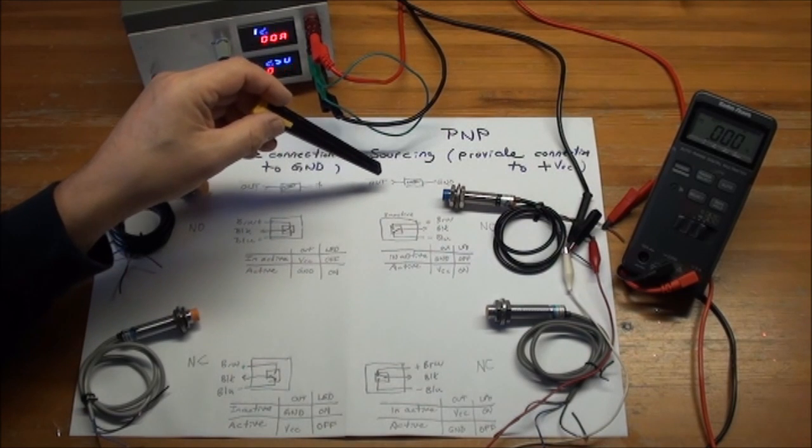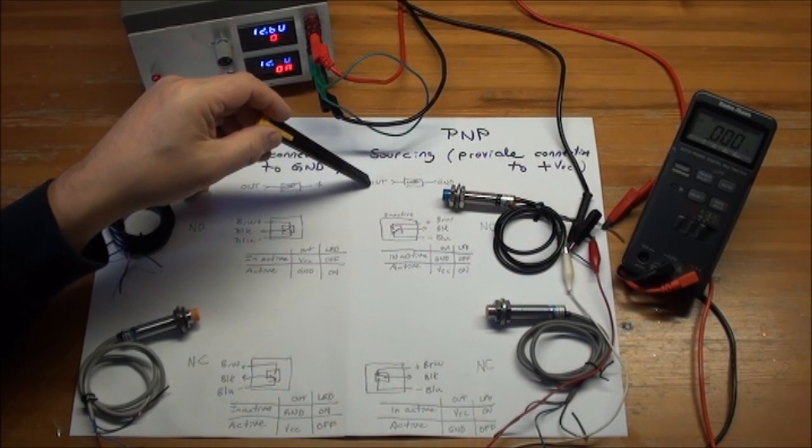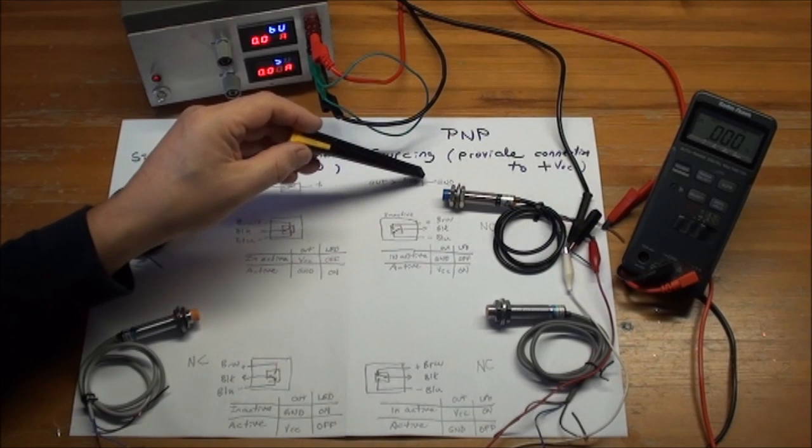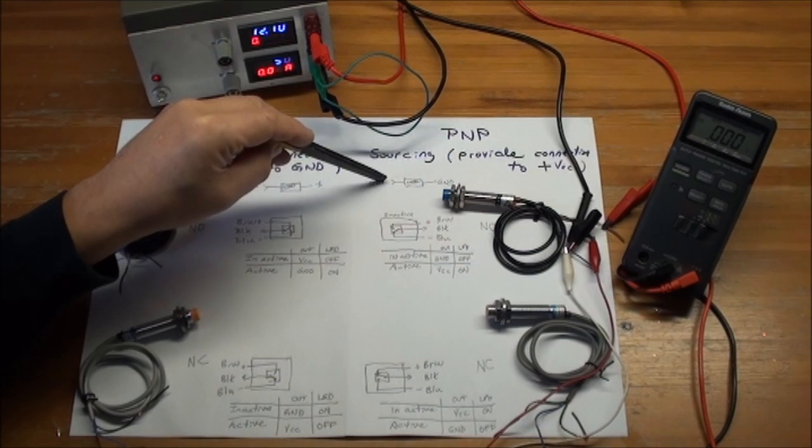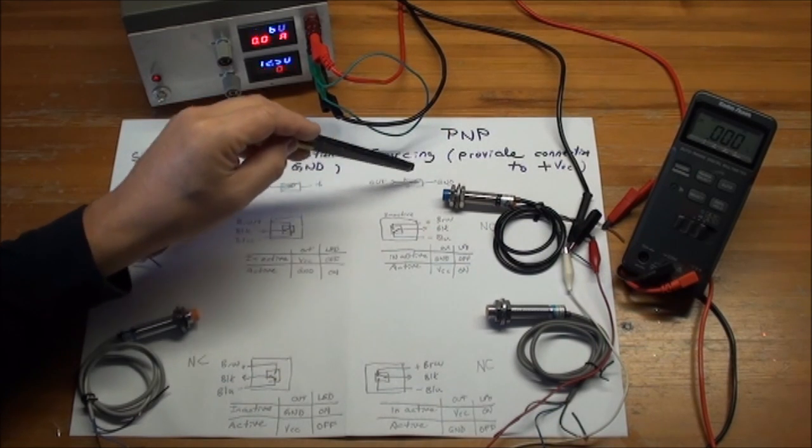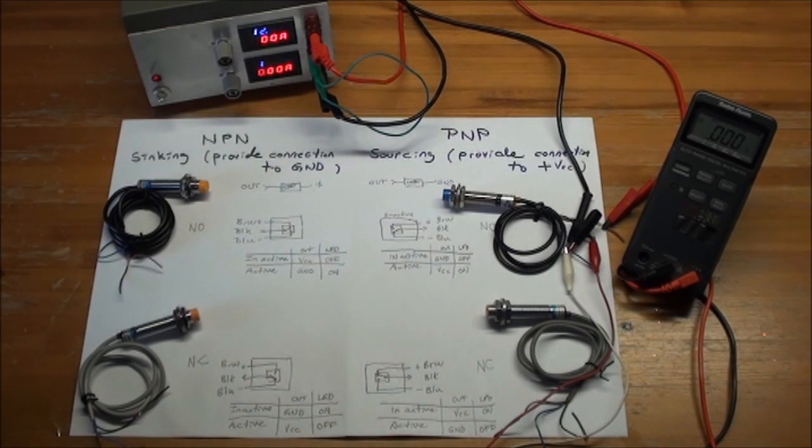If you want to connect a PNP, then you take the out and then the load and then connect to ground. So power will flow from out, which becomes plus, and then to ground, which then will give you the current you need.